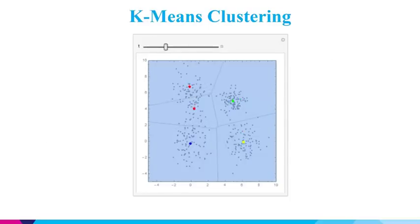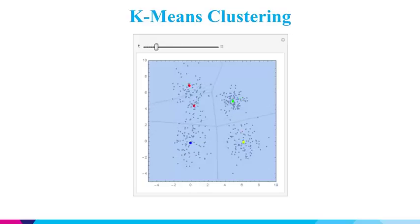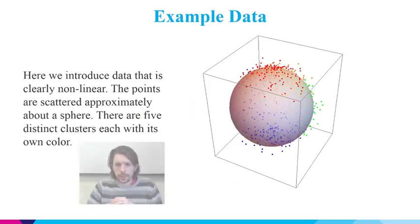Here I have a movie illustrating this procedure. The movie starts with five centers, each with a different color, chosen randomly. We then iterate a procedure which moves these centers so that the sum of the distances of each associated data point from the center is minimized. You can see the green point identifying one cluster in the top right, the yellow point identifying the cluster in the bottom right, and so on. That was k-means clustering, and this will form the basis of self-organizing maps.